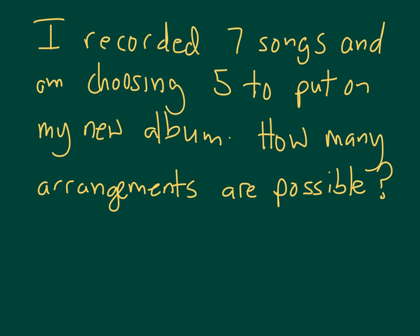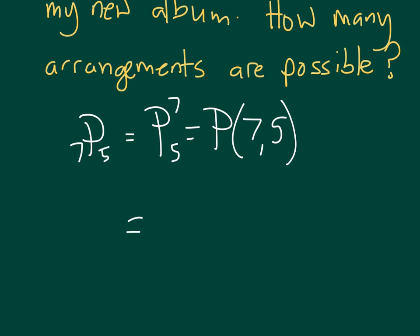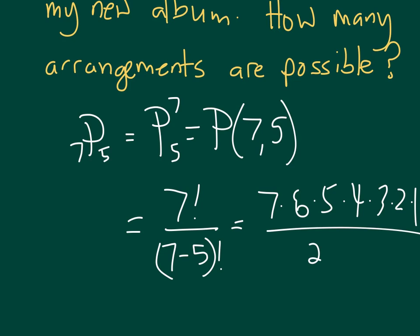For example, I recorded seven songs and I'm choosing five of them to put on my new album. You didn't know that about me—the album drops next week. How many arrangements are possible? How many different albums could I have produced with this? Well, the question here is what's 7P5? This is sometimes written as a P with a 7 and a 5, or sometimes as P(7,5). I'm going to do this without my calculator just for fun because I love this kind of stuff. So, 7 factorial—the first number is the total group size—divided by 7 minus 5 factorial. So, 7 times 6 times 5 times 4 times 3 times 2 times 1 divided by 2 factorial, 2 times 1.